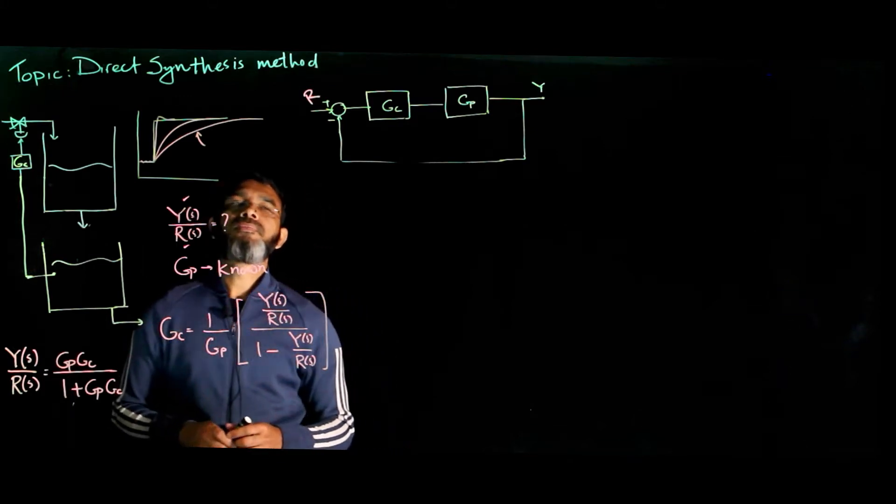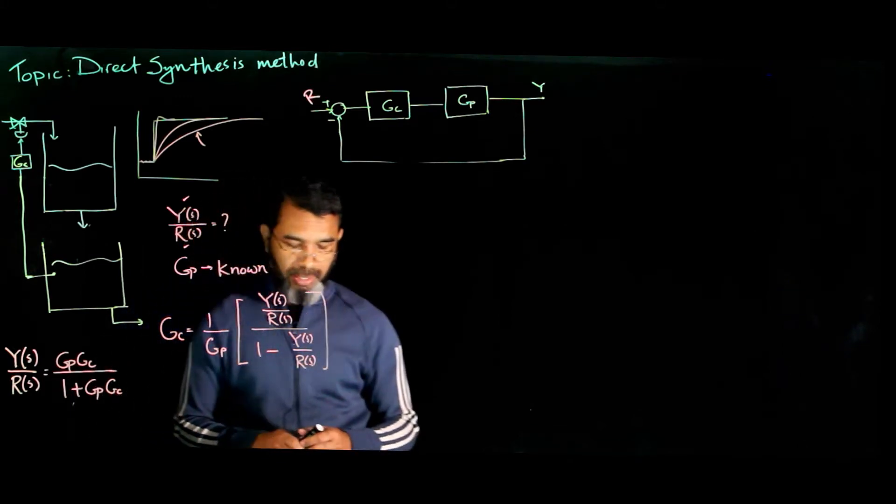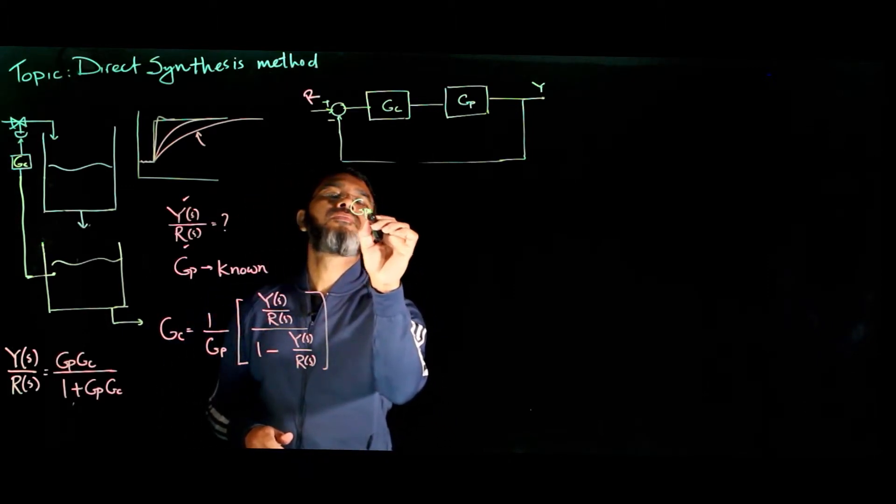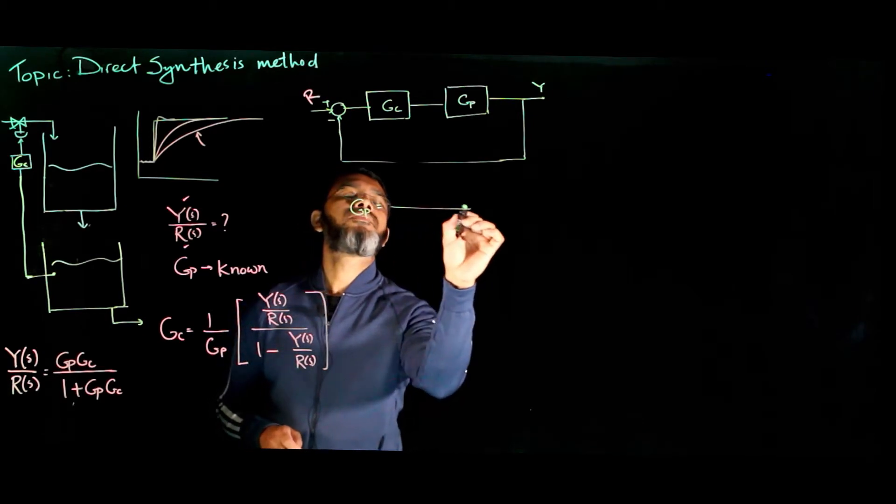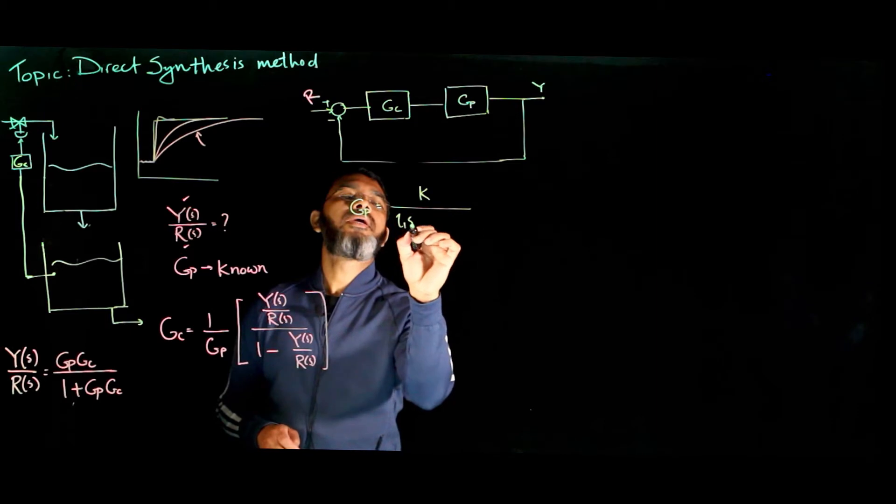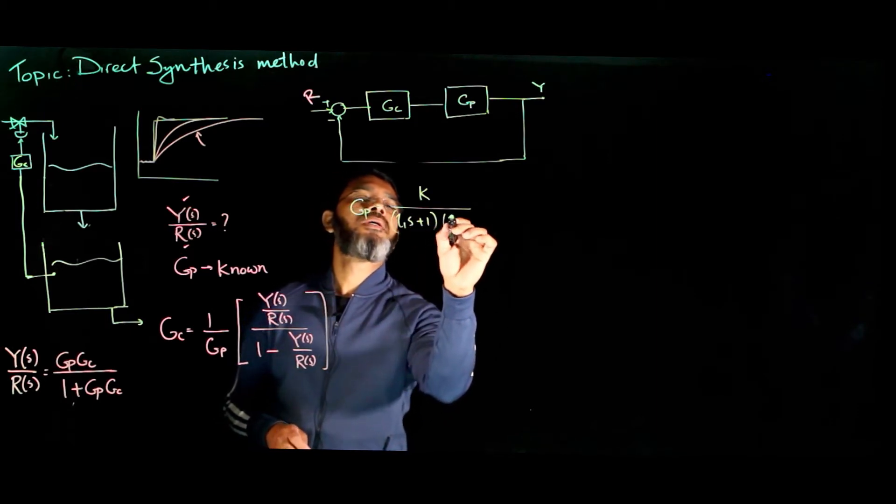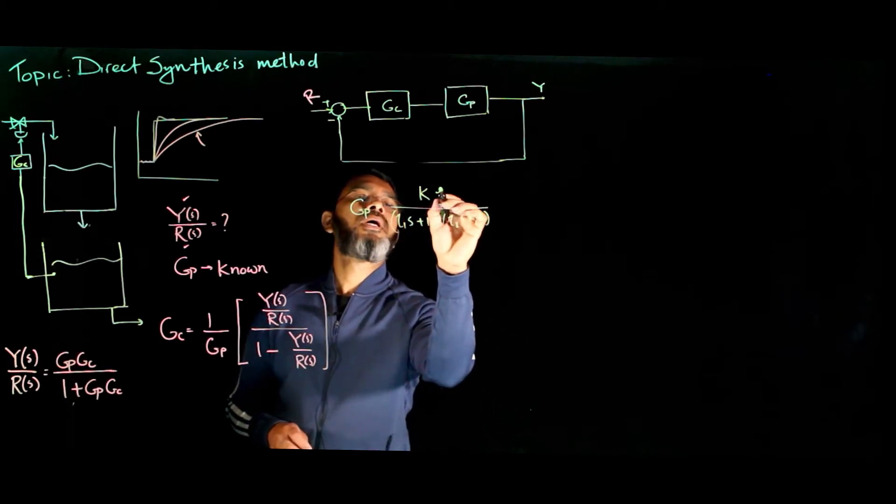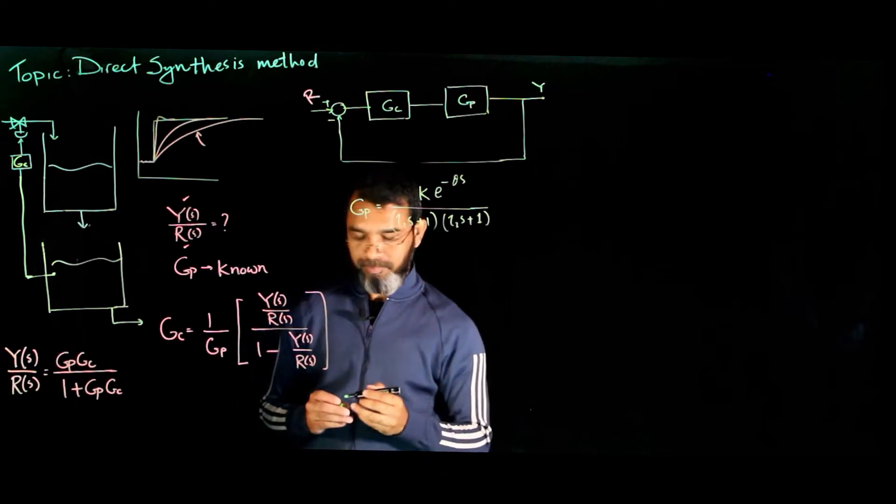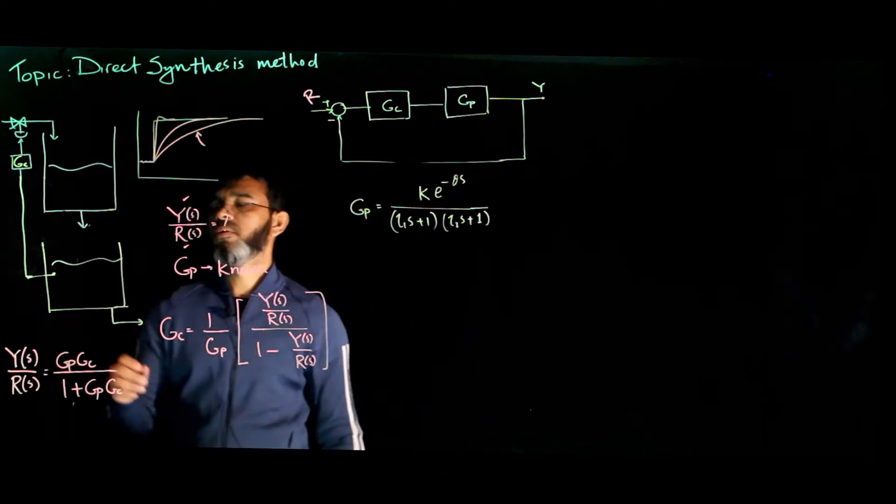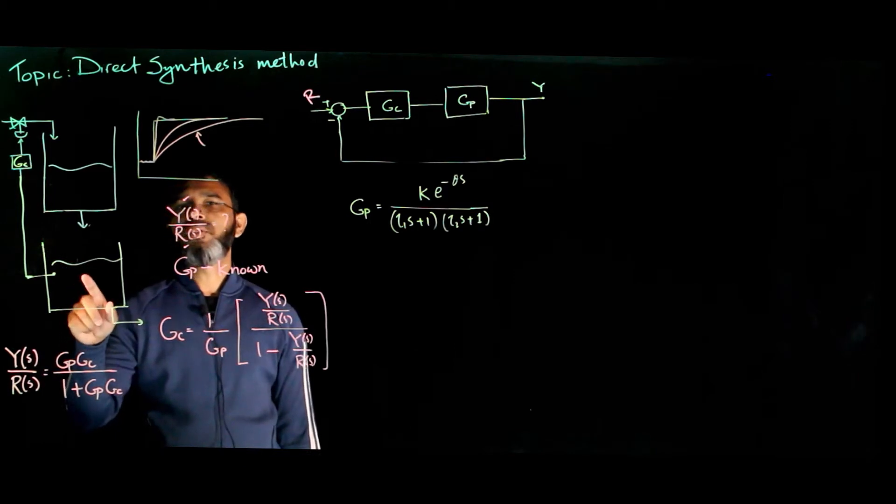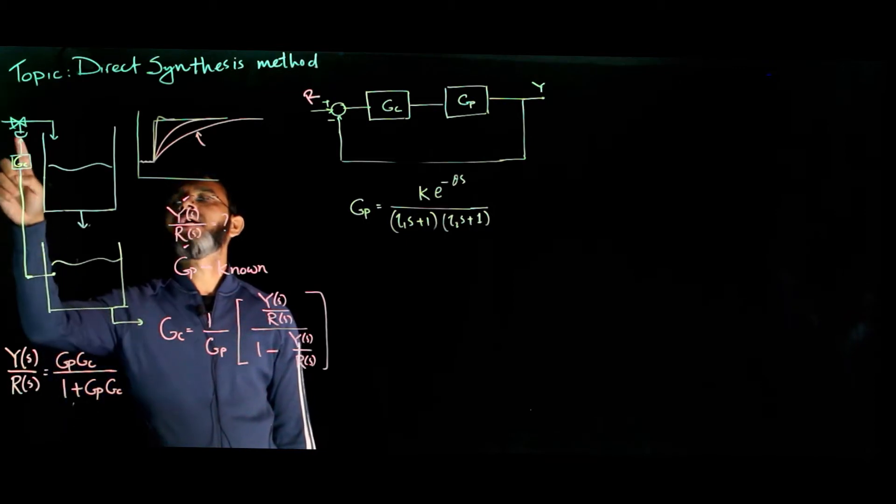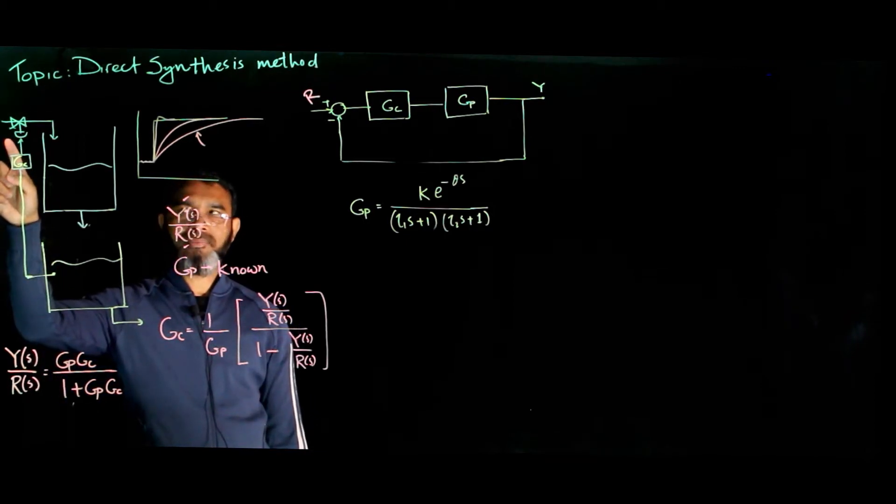Now let's look at the direct synthesis method for a given case where the process is second order and also there is a delay term. This can be the case where we have two tanks and we are trying to maintain the level in the second tank by manipulating the flow in the first tank.